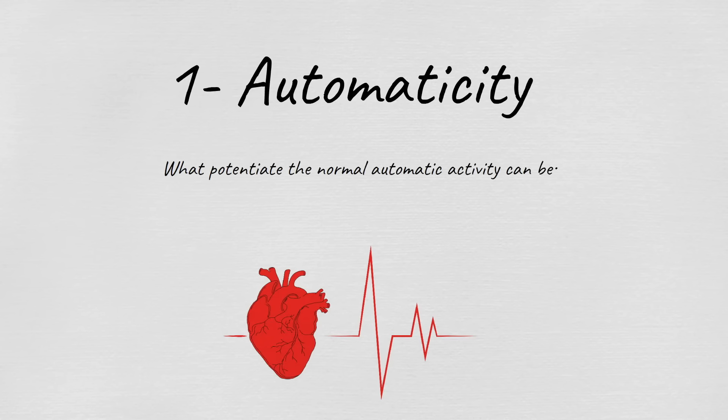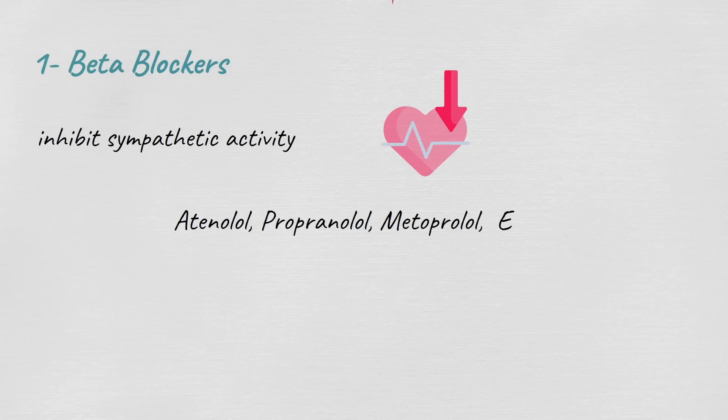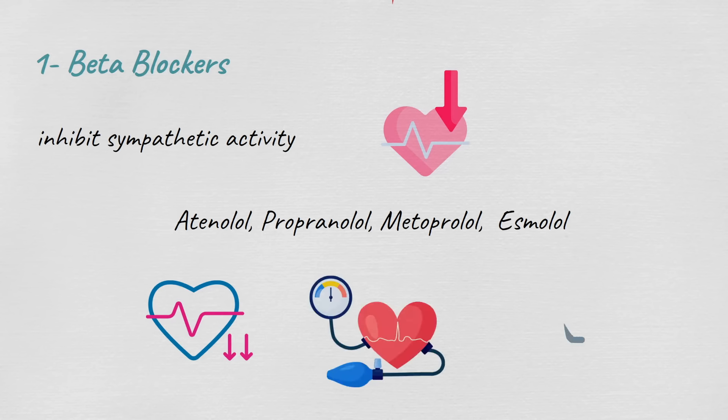What potentiates the normal automatic activity and can lead to arrhythmia is high sympathetic activity, which increases the frequency of sinus rate. So one class of antiarrhythmic agents are beta blockers. By blocking beta receptors, they will inhibit the sympathetic activity and decrease the heart rate and contractility. Beta blocker agents include atenolol, propranolol, metoprolol, and esmolol. Adverse effects include bradycardia, hypotension, and bronchospasm.